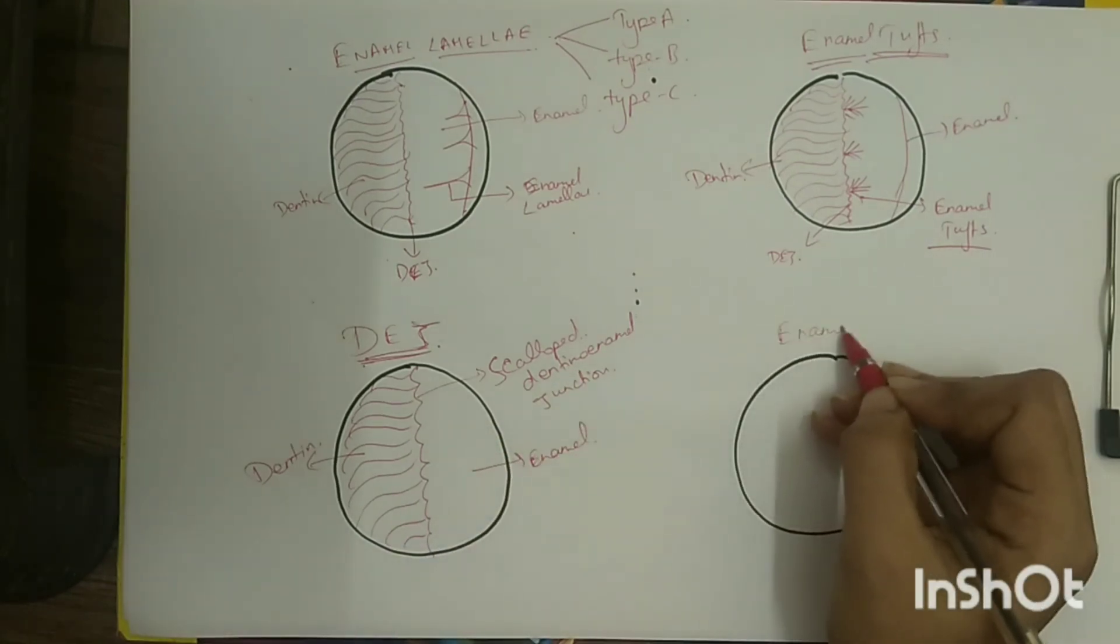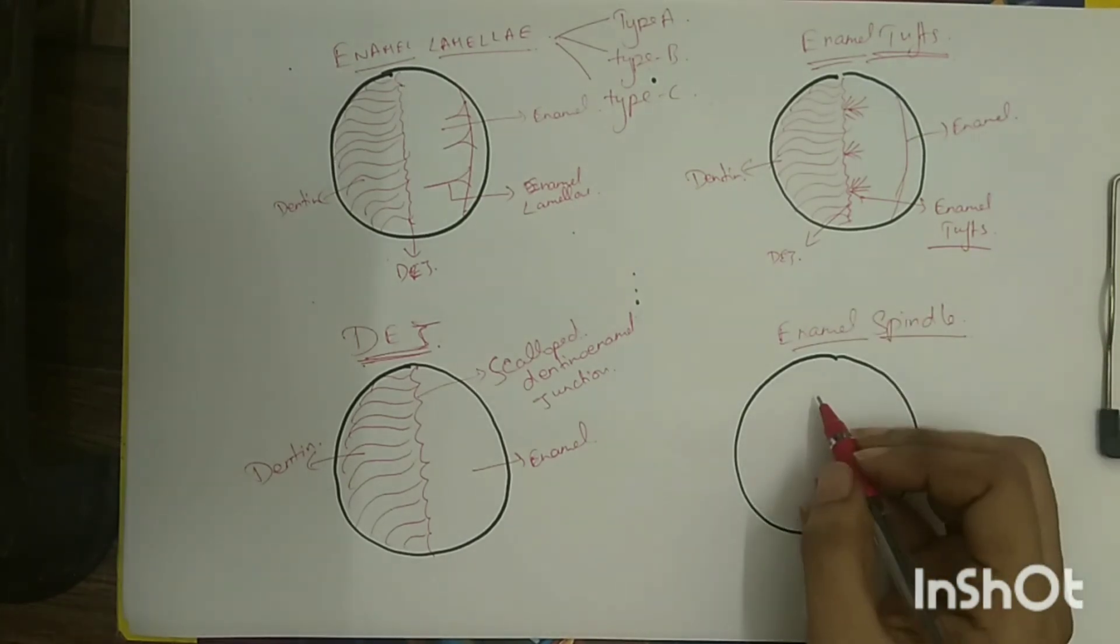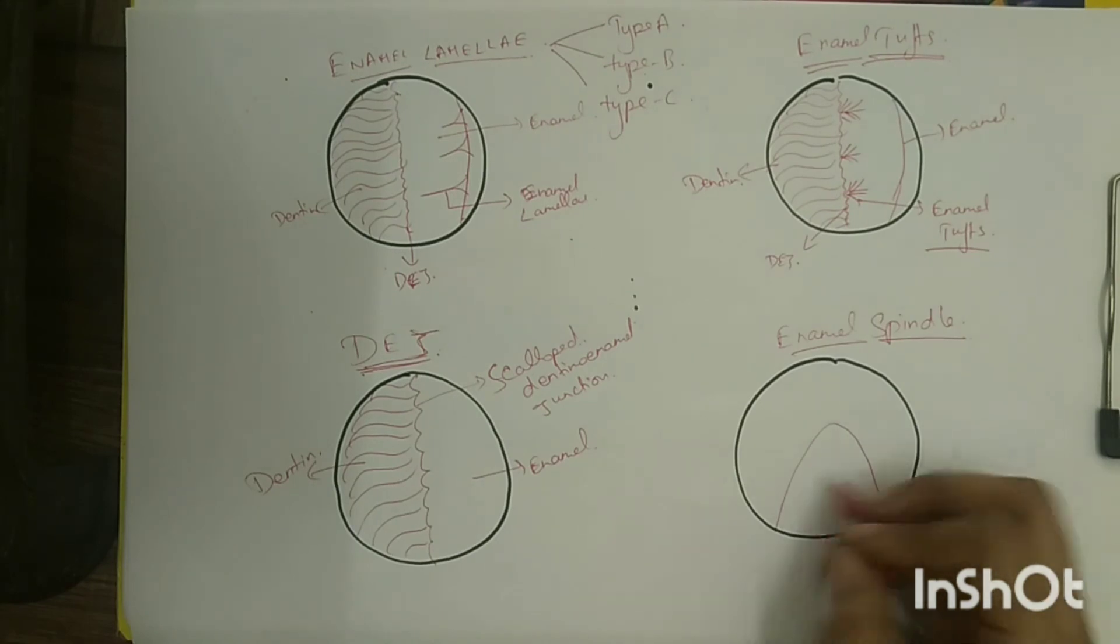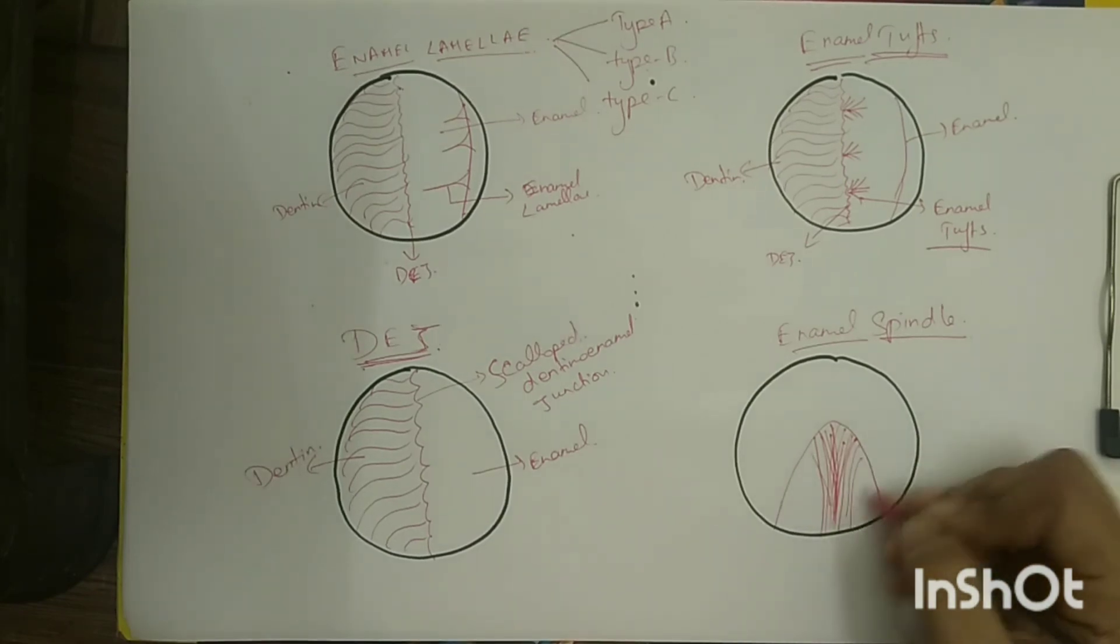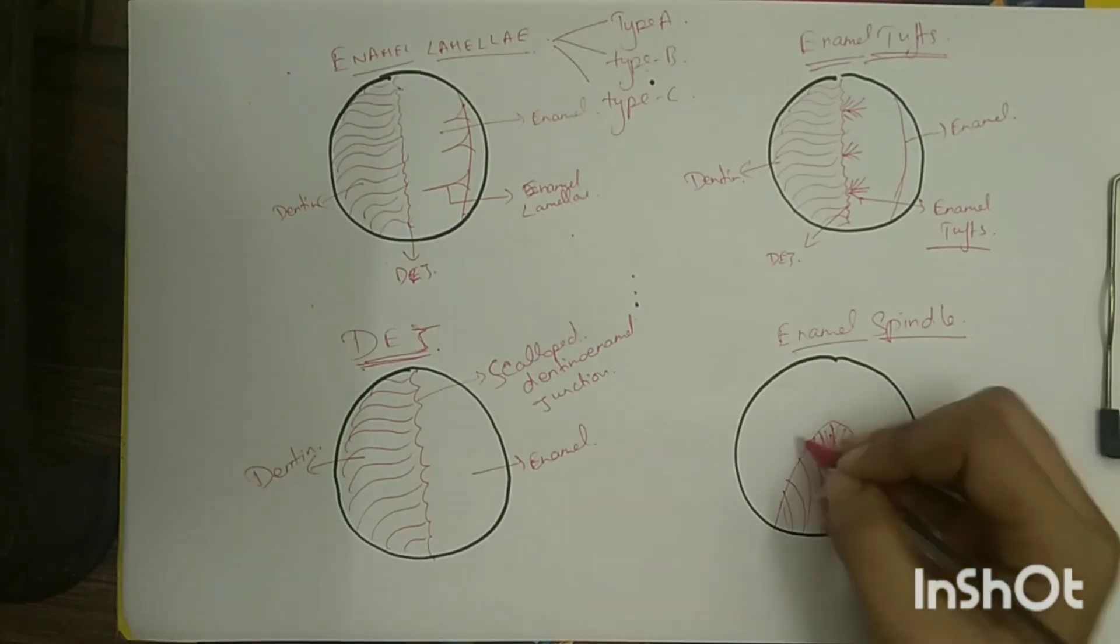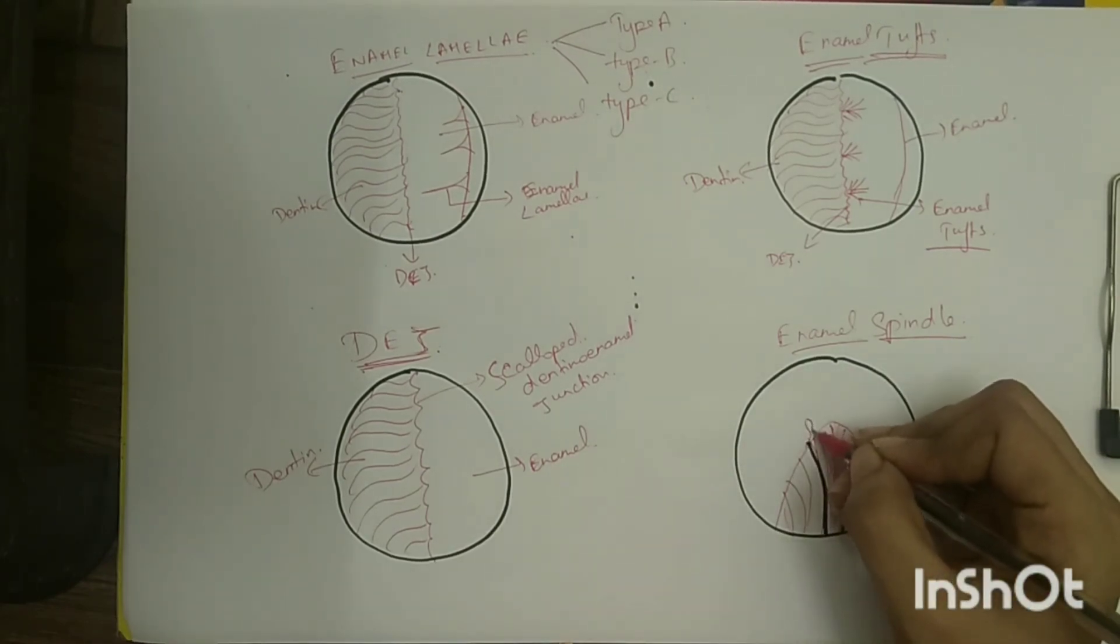Enamel spindles: in some areas, the odontoblastic processes from the dentin pass across the DEJ into the enamel for a short distance. These processes may be pointed or rounded or may have a noticeable thickened end, in which case they are known as enamel spindles.